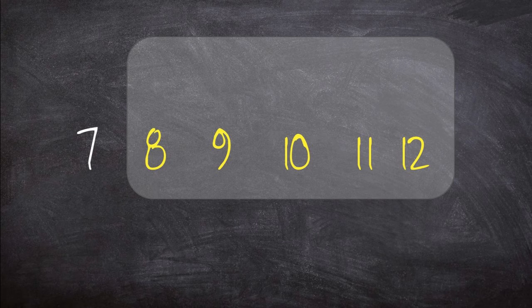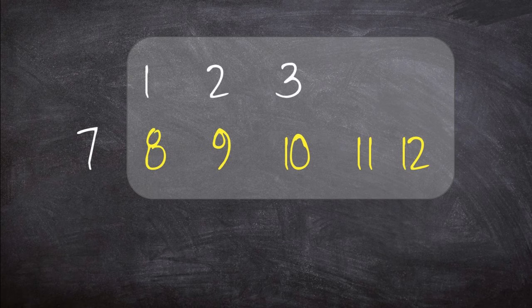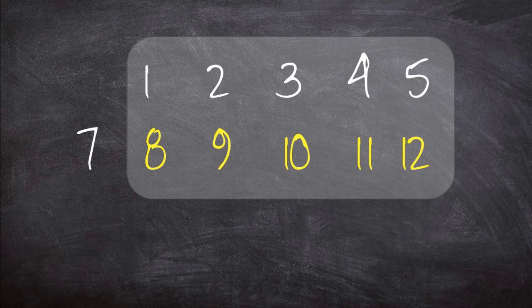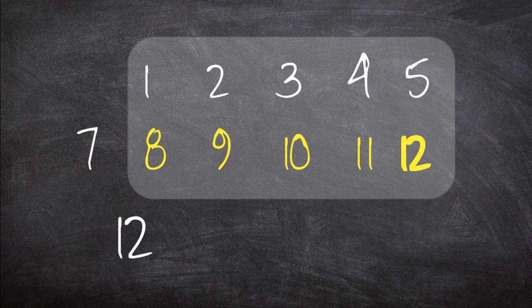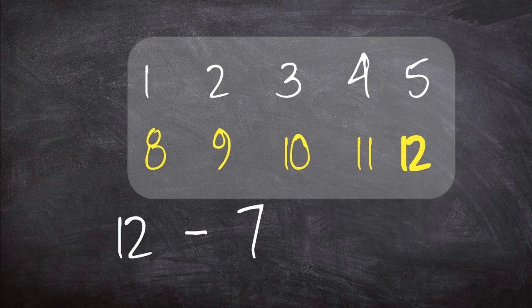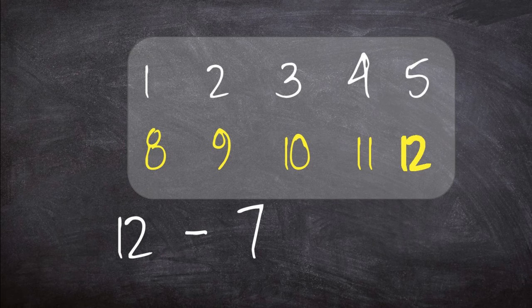Well, how many numbers is that right there? 1, 2, 3, 4, 5. We counted 5 up from 7. So, 12 minus 7 equals 5.